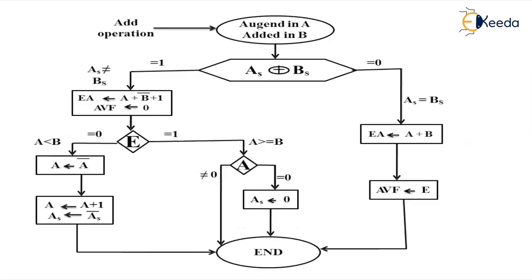This diagram shows the add operation — augend in A, addend in B. The augend is the number to which another number is added, so A is the number to which B is added. This is linked through registers. Now consider the case when AS equals 1. First condition: if AS is not equal to BS — where AS stands for register A and BS stands for register B — we perform the EA operation.